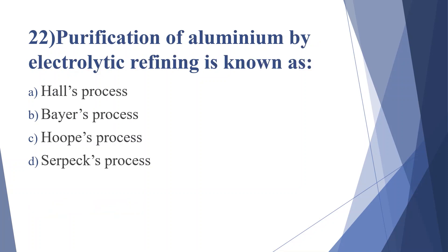Twenty-second question: purification of aluminium by electrolytic refining is known as — option A: Hall's process, option B: Bayer's process, option C: Hoopes process, option D: Serplex process. Answer is option C, Hoopes process.